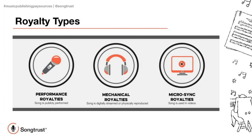These royalties are collected and paid out by PROs such as BMI, ASCAP, or CSAC here in the United States. Mechanical royalties are generated whenever a copy of your song is made — for example when a label produces a CD, someone digitally purchases your song on a store like iTunes, or when your song is streamed. The mechanical royalty rate for physical and digital sales is set by the local copyright office and is referred to as the statutory mechanical rate. However, streaming rates are not statutory, so each streaming service pays out a bit differently and each one has their own calculation to determine the rate.